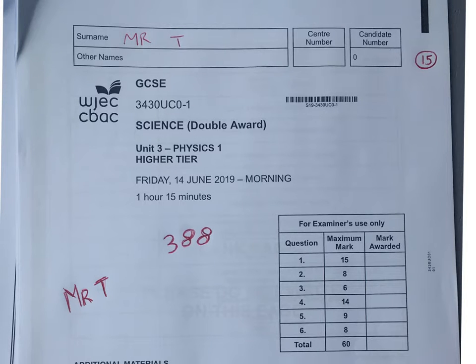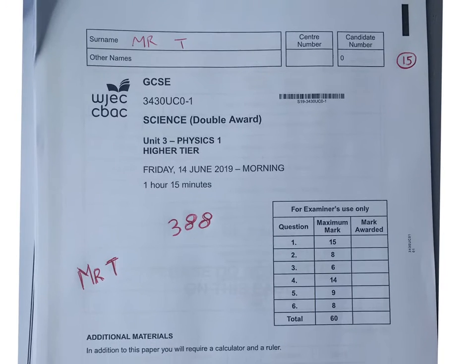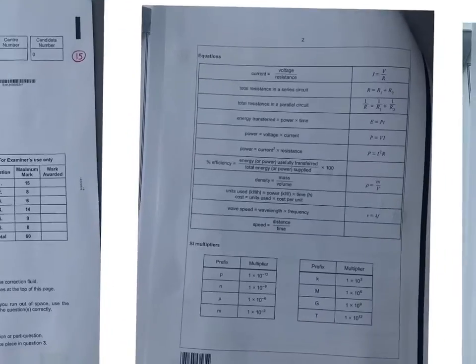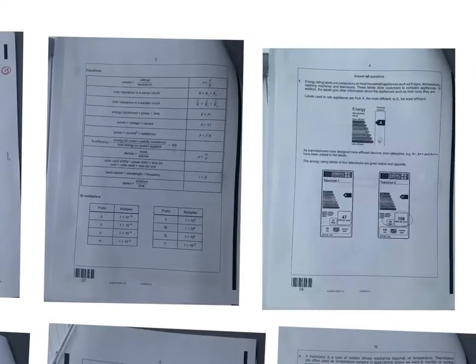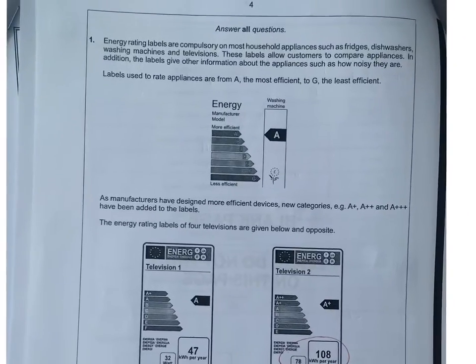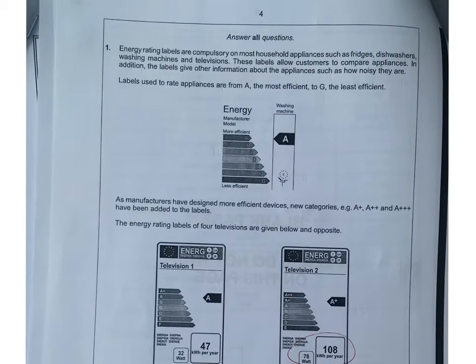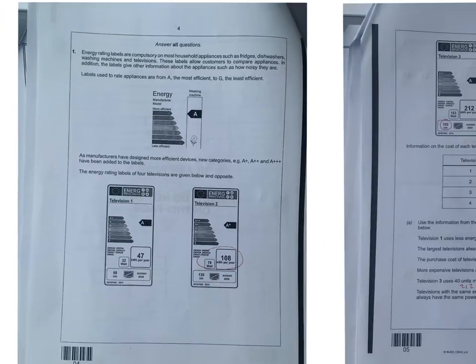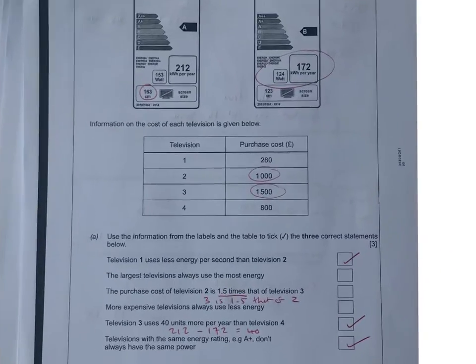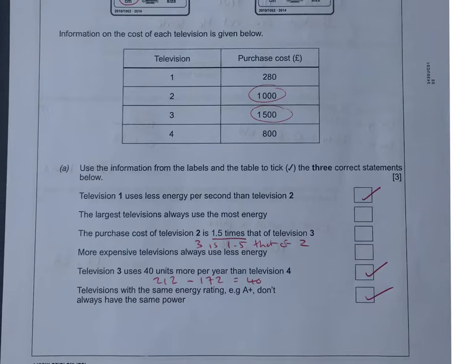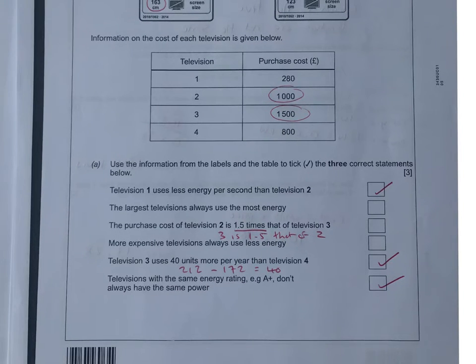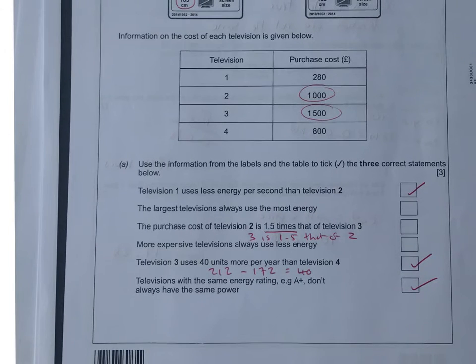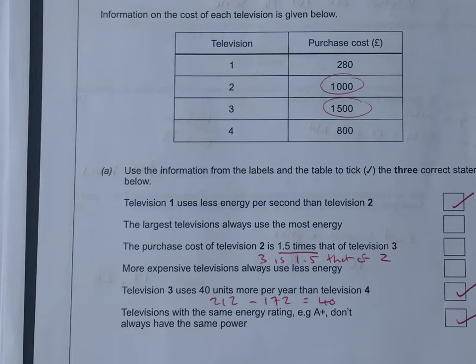So we've got the higher tier 2019 year 10 physics paper for double award, your formula sheet as usual. We start off with not a very nice question in my opinion, it takes a lot of time because there's a lot of numeracy going on.